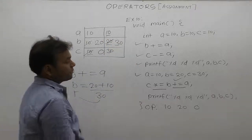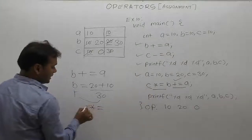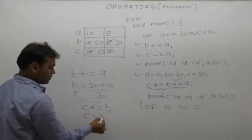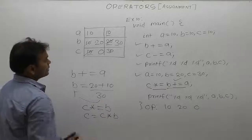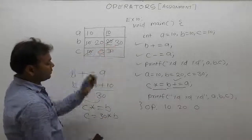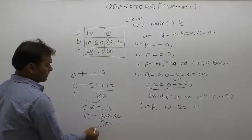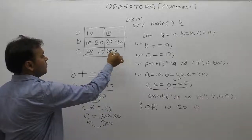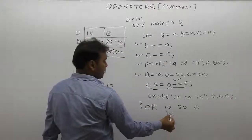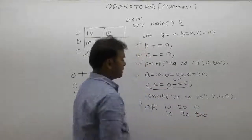After solving plus-equal, next we solve multiply-equal. The first operand for multiply-equal is c, and the second operand is b. It is equivalent to c equals to c multiplied by b. Value of c is 30 and value of b is also 30. 30 multiplied by 30 equals 900, which is assigned to variable c. Now value of c becomes 900. Therefore, the final output is: value of a is 10, value of b is 30, value of c is 900.